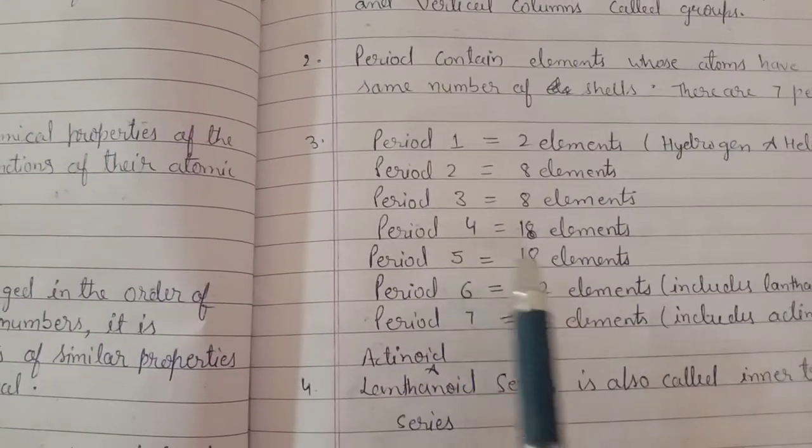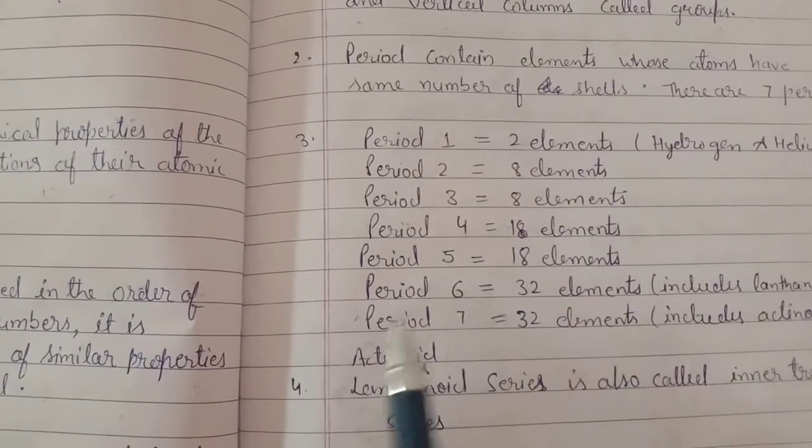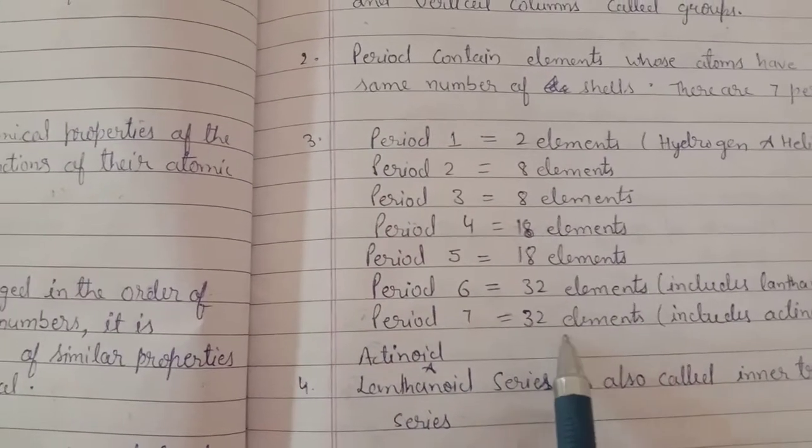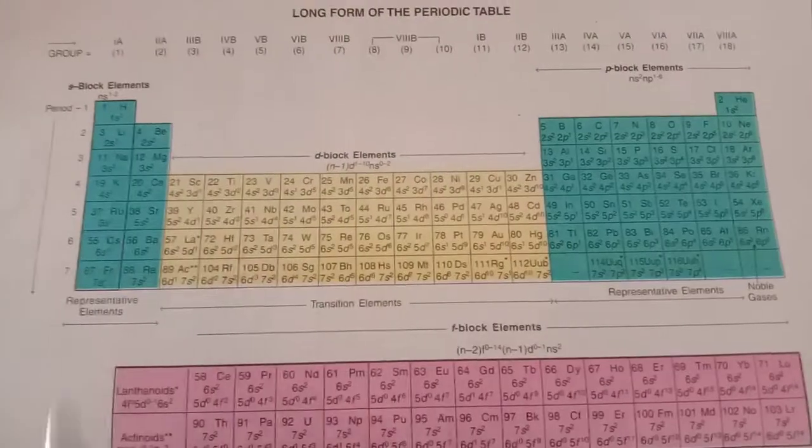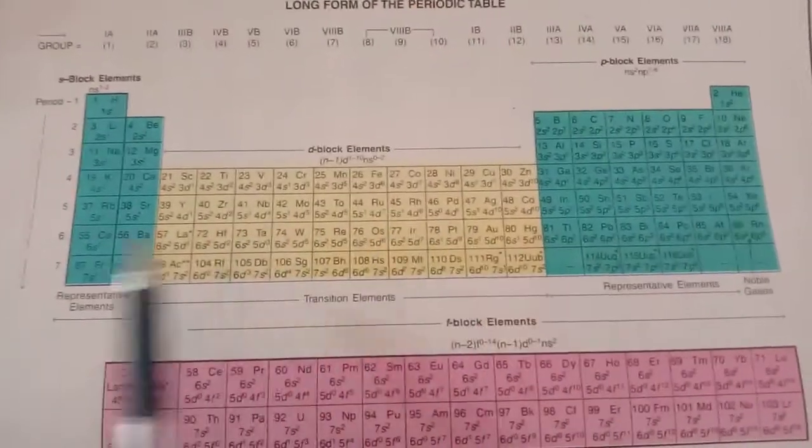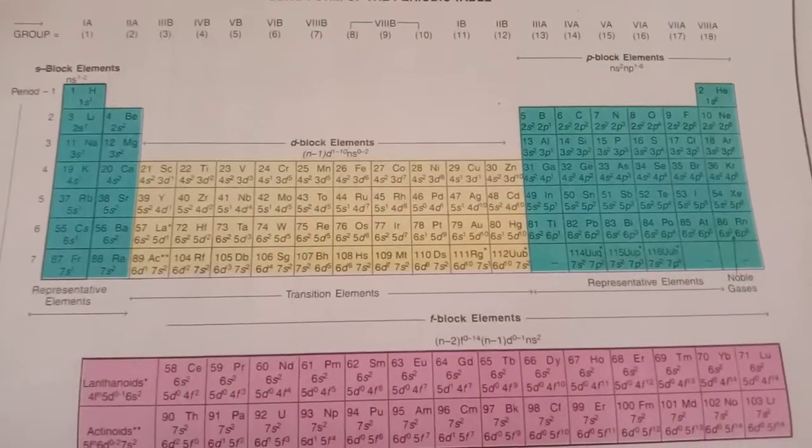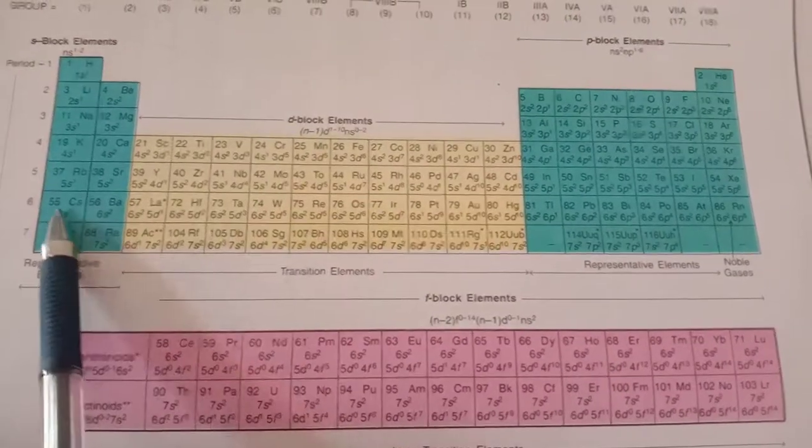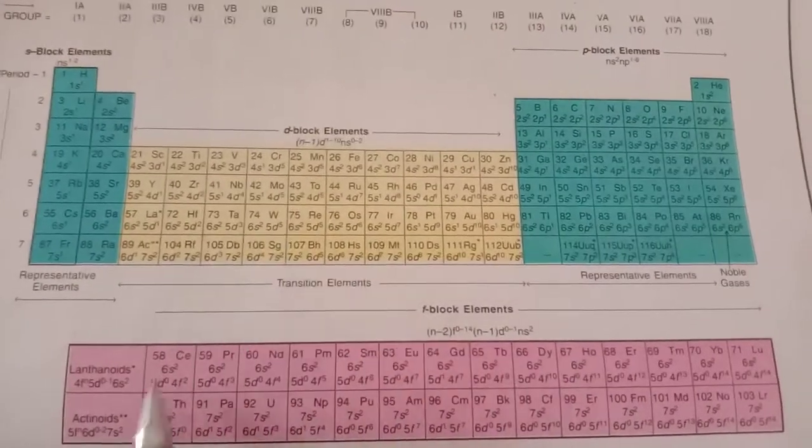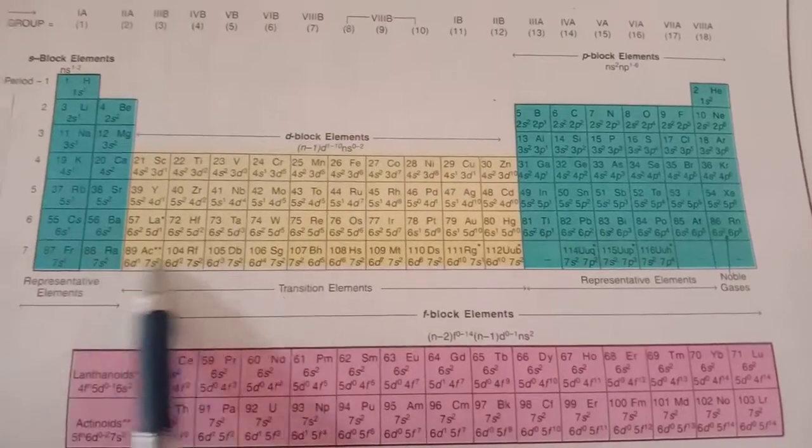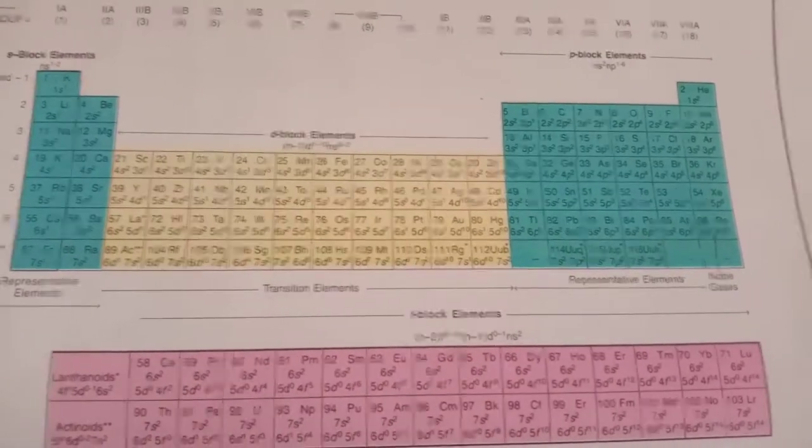Period number four and five have 18 elements each. Period number six and seven have 32 elements each, including these lanthanoids which come in period number six in between, and these actinoids which come in between period number seven. We will discuss them later.